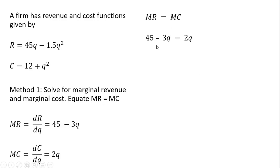We set marginal revenue equal to marginal cost. So our two equations that we just found, we set them equal to one another, and we're going to solve for q. Adding 3q to both sides, we get 5q. And then dividing through by 5, the profit maximizing output is 9.